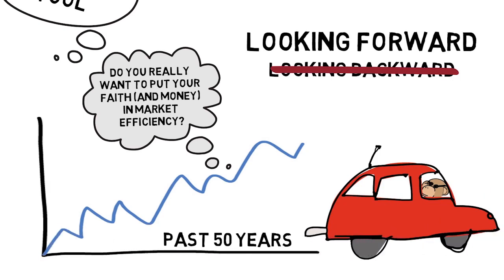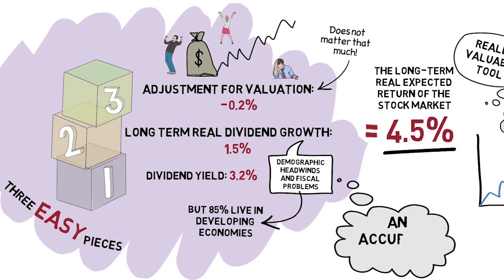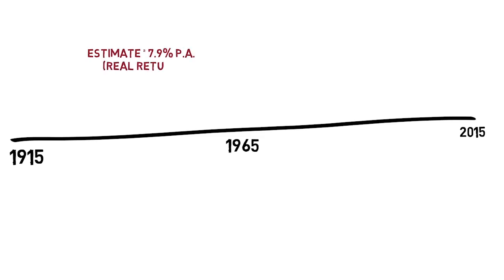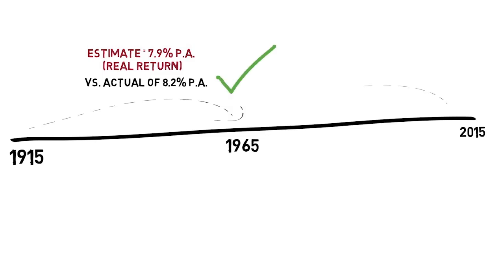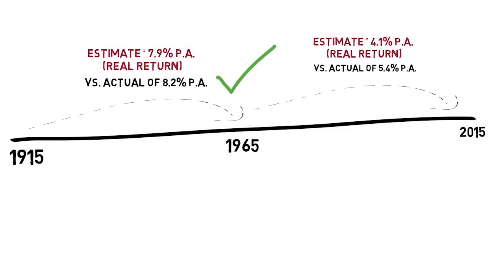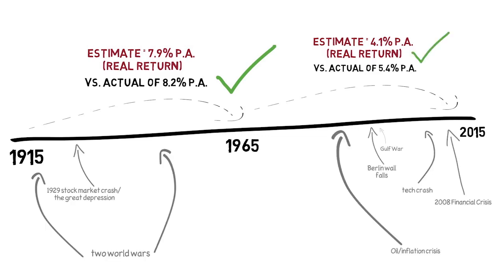So does this three easy pieces approach give us an accurate estimate of the future return of the stock market? It's hard to say as we don't have thousands of years of data to test it against. But we can take a look at the two data points of history we do have. In 1915, our estimate would have been 7.9%. The outcome over the next 50 years was 8.2% — not bad. In 1965, our 50-year estimate would have missed by 1.3%, a bigger miss but still a lot better than if we'd used the previous 50-year return of 8.2% as our estimate. I'd say that's not too bad given all the dramatic events of the last hundred years.